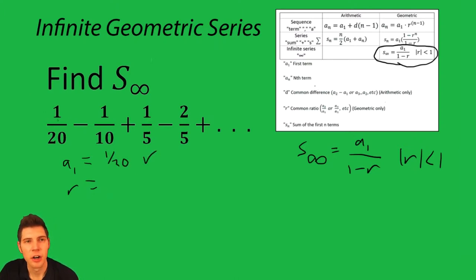So we got that taken care of. R is what do we multiply this first term by to get to the second term or the second term to get to the third term. So the easiest way to do r is a two divided by a one. So a two in this case is negative one tenth and a one is one twentieth.